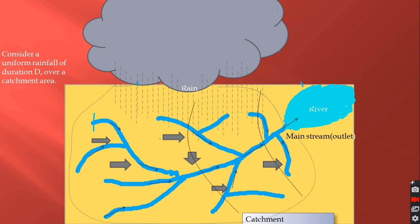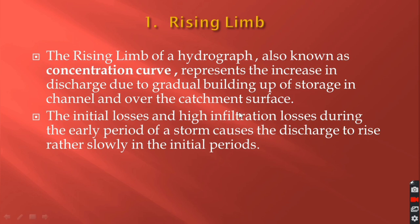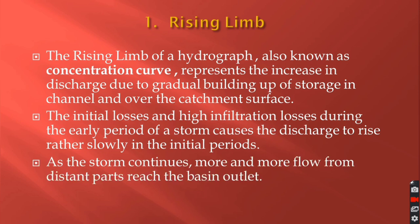After that, the area which is farther from the outlet will produce runoff, and like this, water will begin to run off from different areas. At last, runoff will occur from the remotest area. That is why the discharge at the outlet will increase with time. The initial loss and high infiltration loss during the early period of the storm cause the discharge to rise slowly in the initial period. As the storm continues, more and more flow from distant parts reaches the basin outlet.